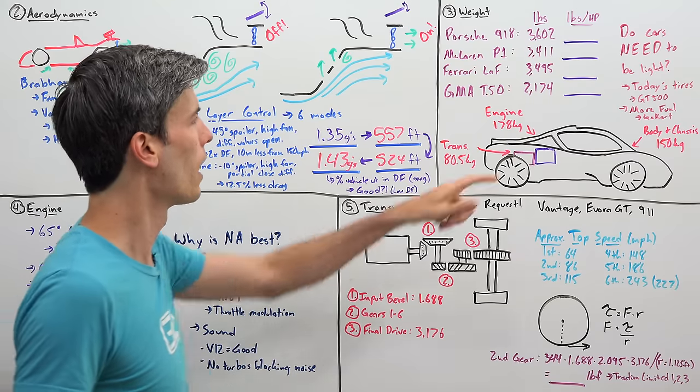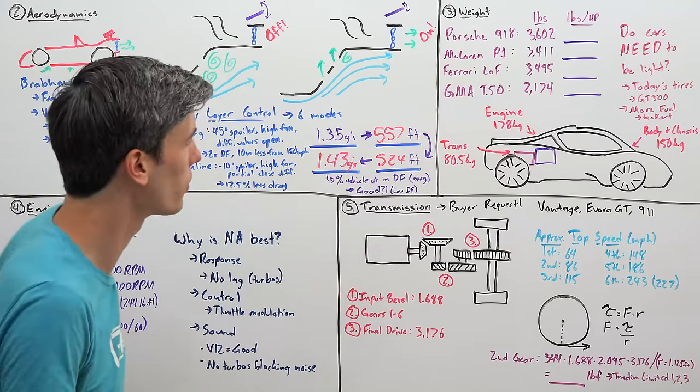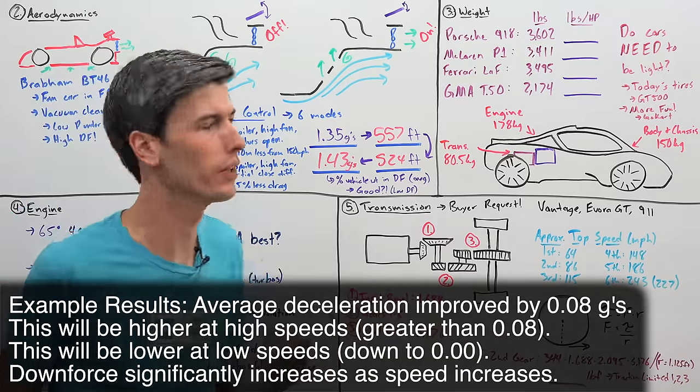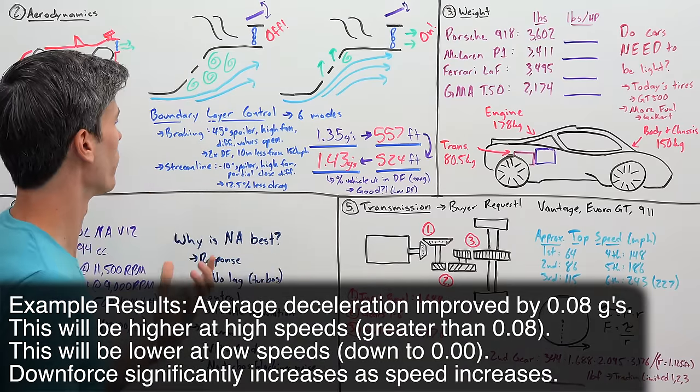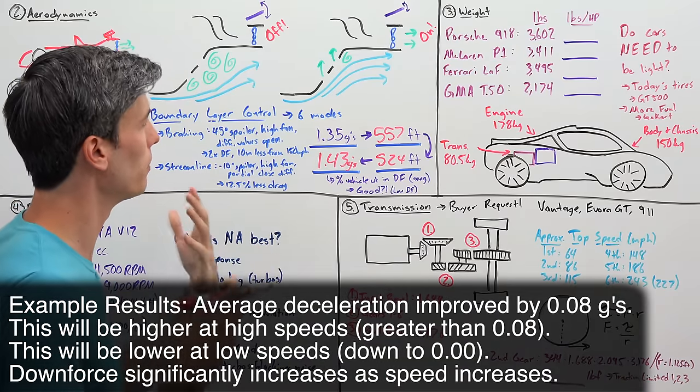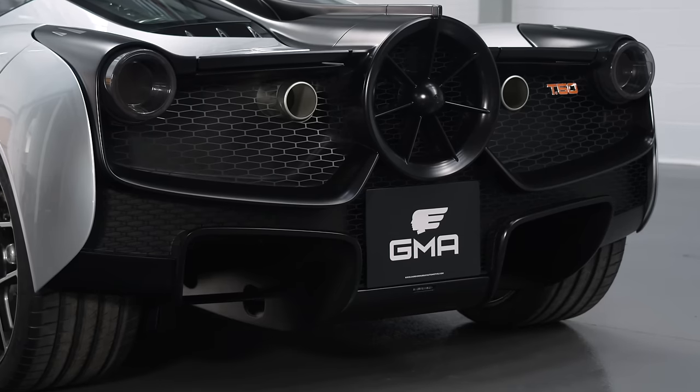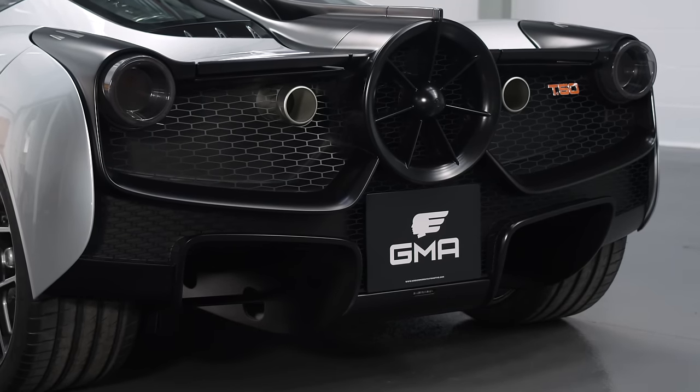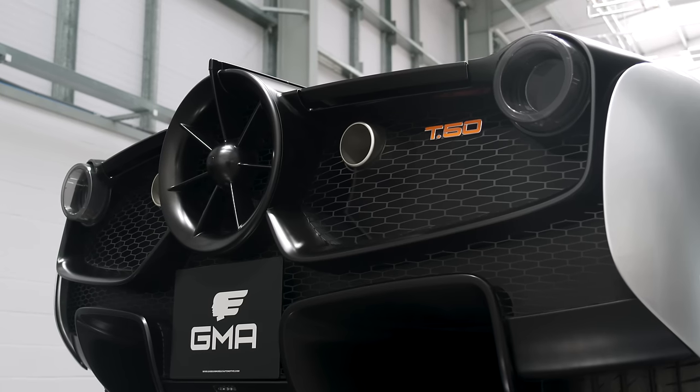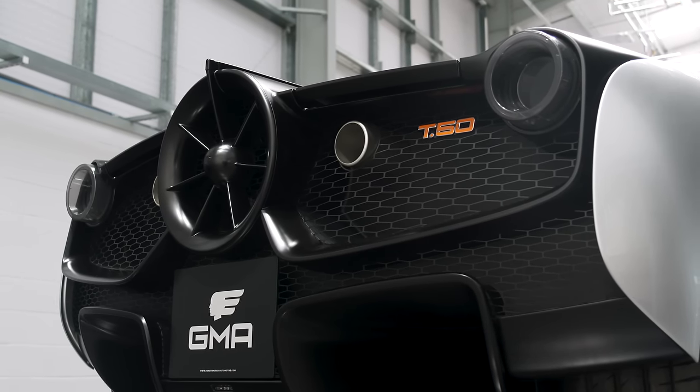In other words, we're maybe adding - I mean, the car weighs about 2200 pounds - maybe we're adding 200 pounds of downforce by turning on this braking mode. So, it is meaningful, yes, but it's probably not nearly as significant as the marketing statement that this fan has had, that it's a fan car and that it's so prominent of a feature there on the back of the vehicle.